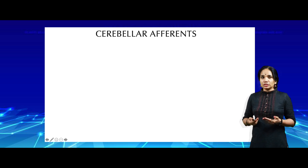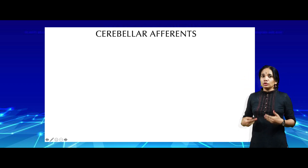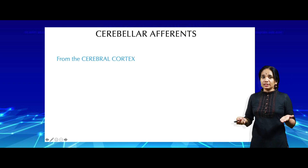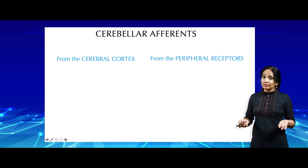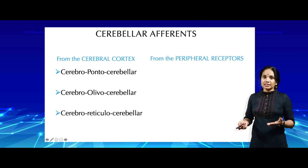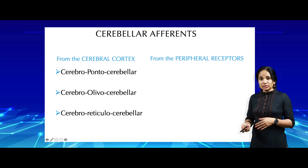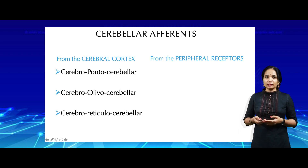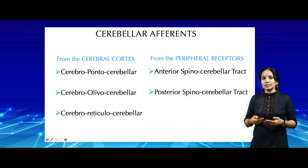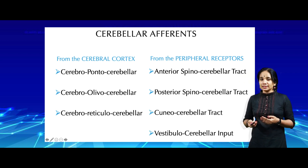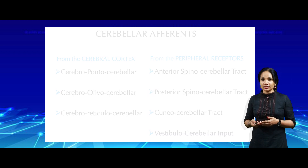To remember cerebellar afferents, remind yourself that the cerebellum receives information from above and from below. Afferents from the cerebral cortex are mainly three: the cerebro-ponto-cerebellar afferents, the cerebro-olivo-cerebellar afferents, and the cerebro-reticulo-cerebellar afferents. From the peripheral receptors, the spinal cord sends them up as the anterior spino-cerebellar tract, the posterior spino-cerebellar tract, the cuneo-cerebellar tract, and relating to balance, the vestibulo-cerebellar tract.